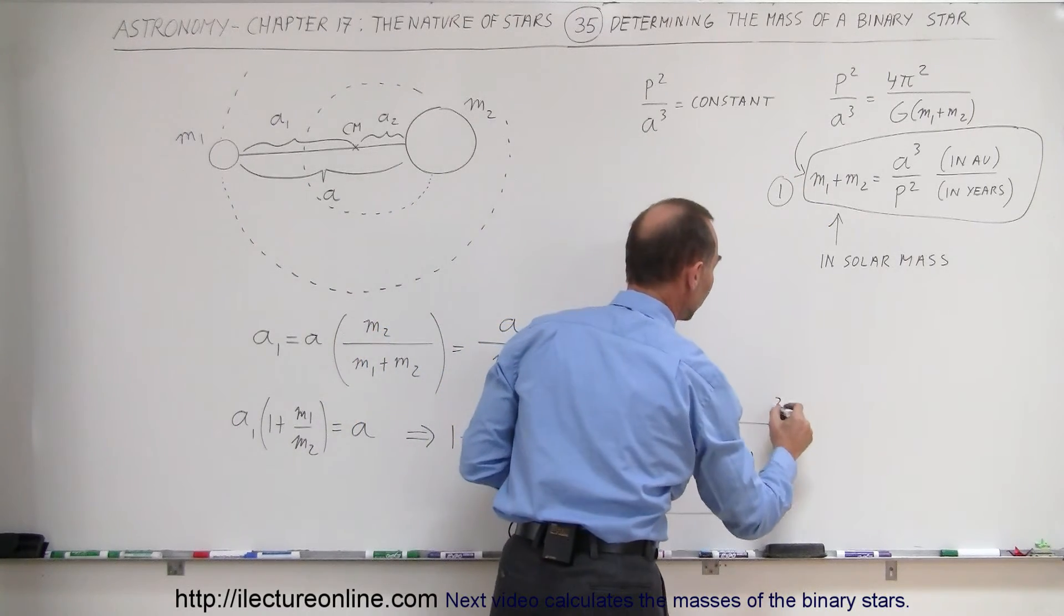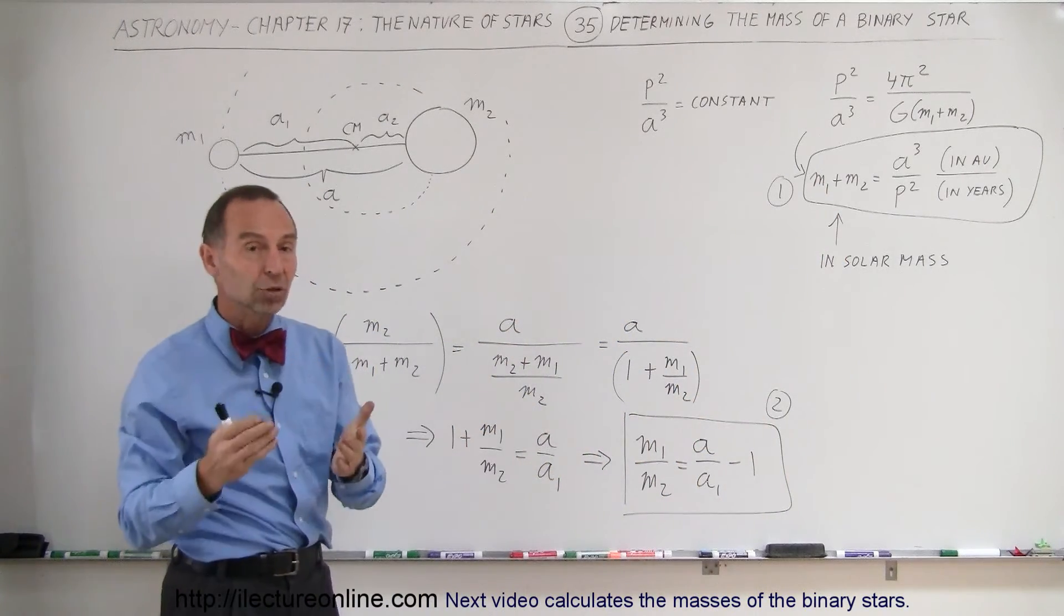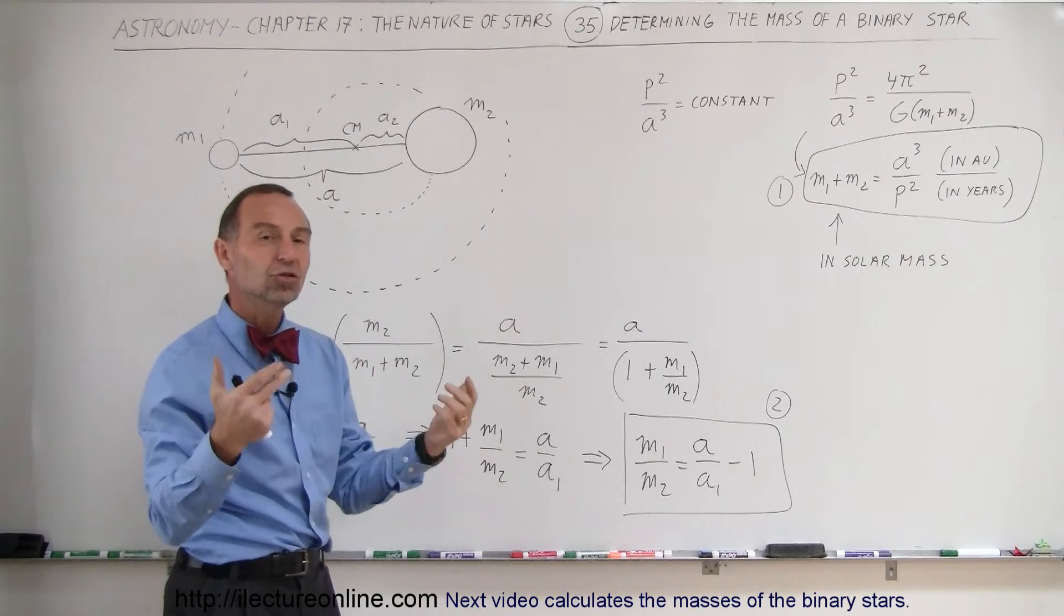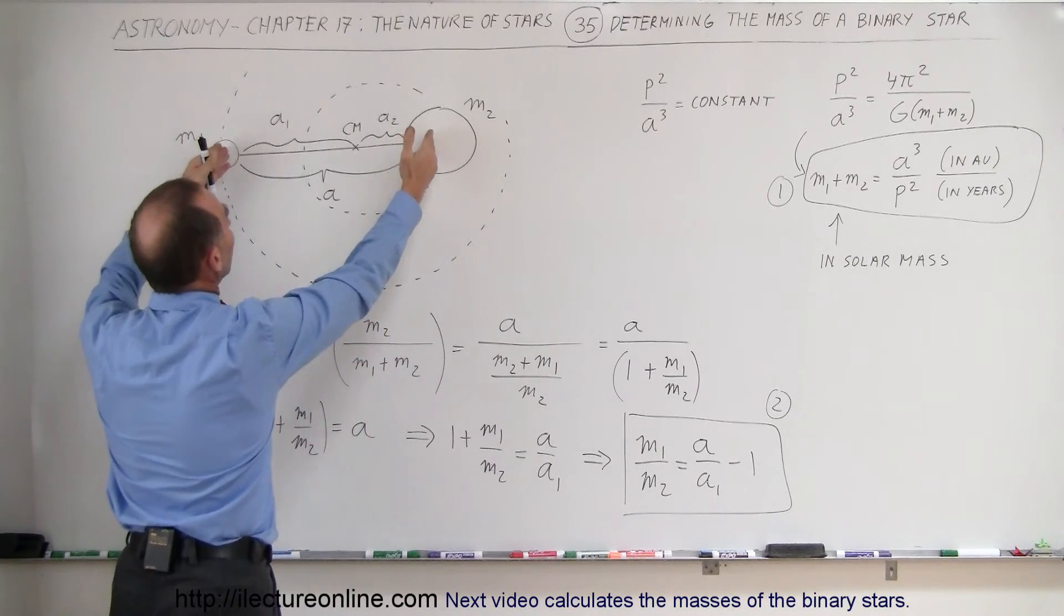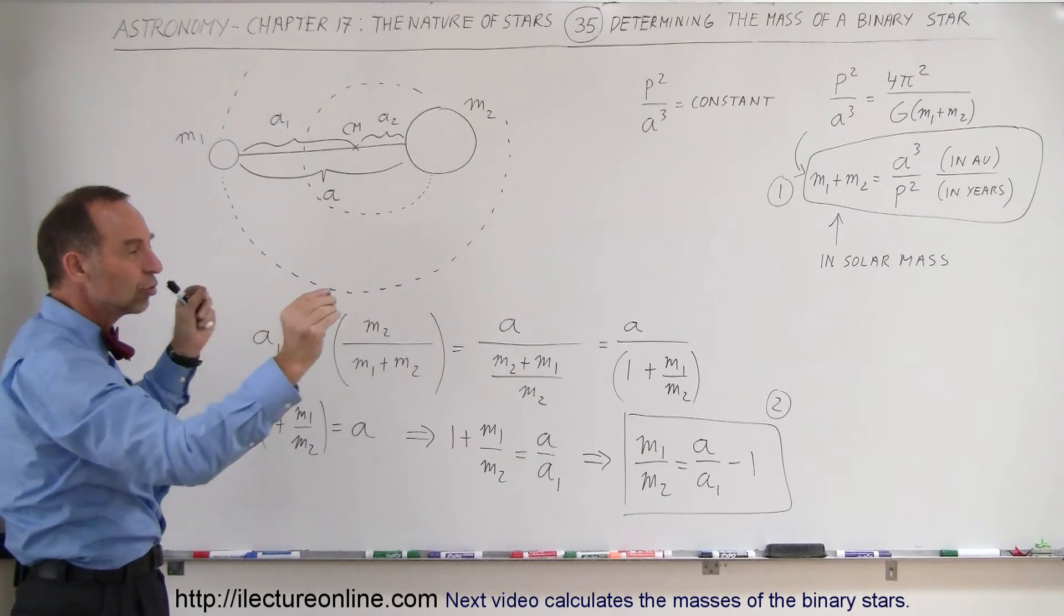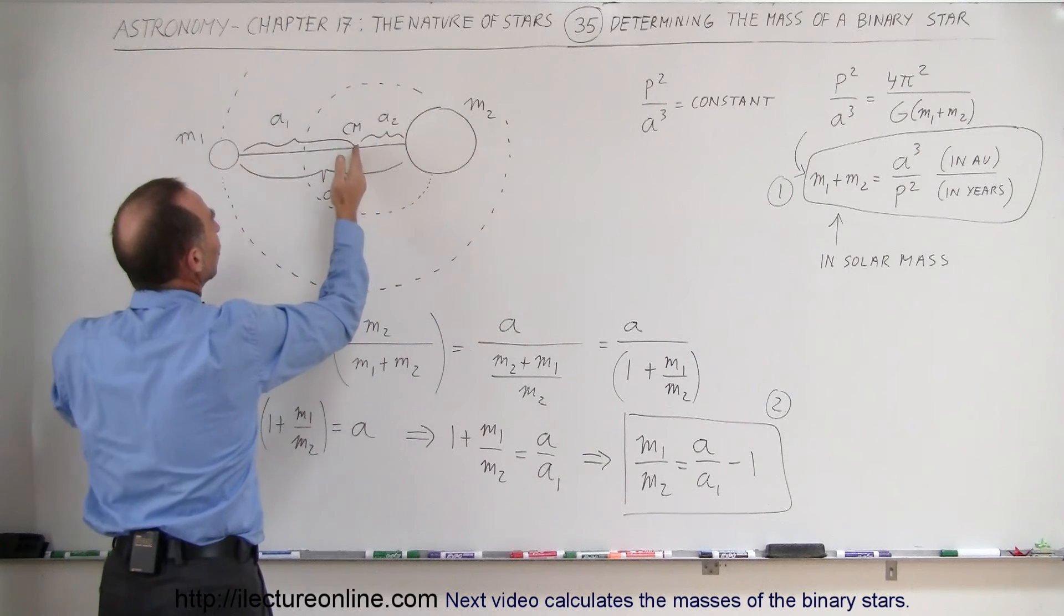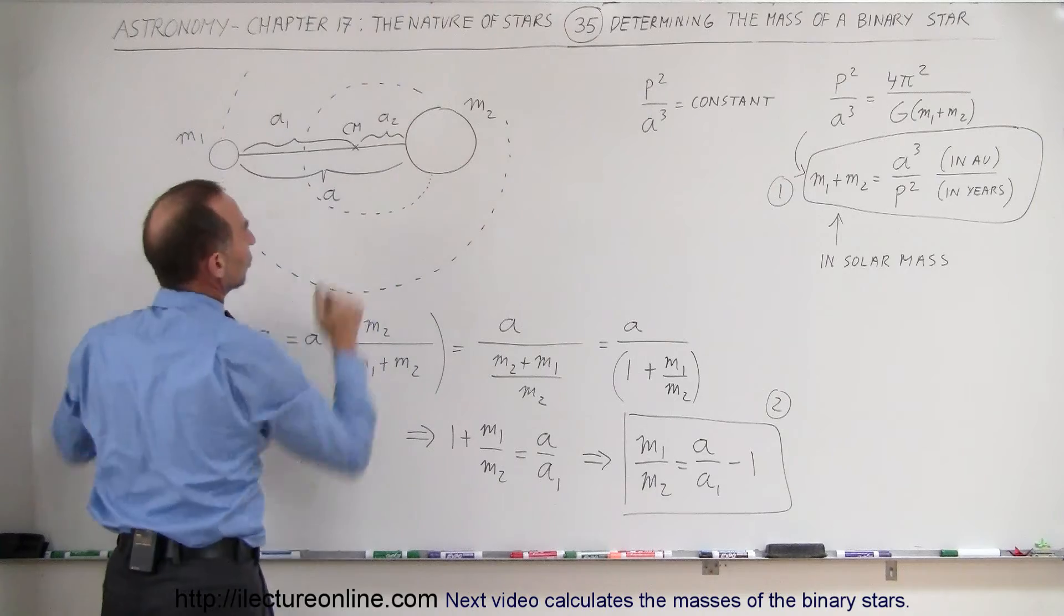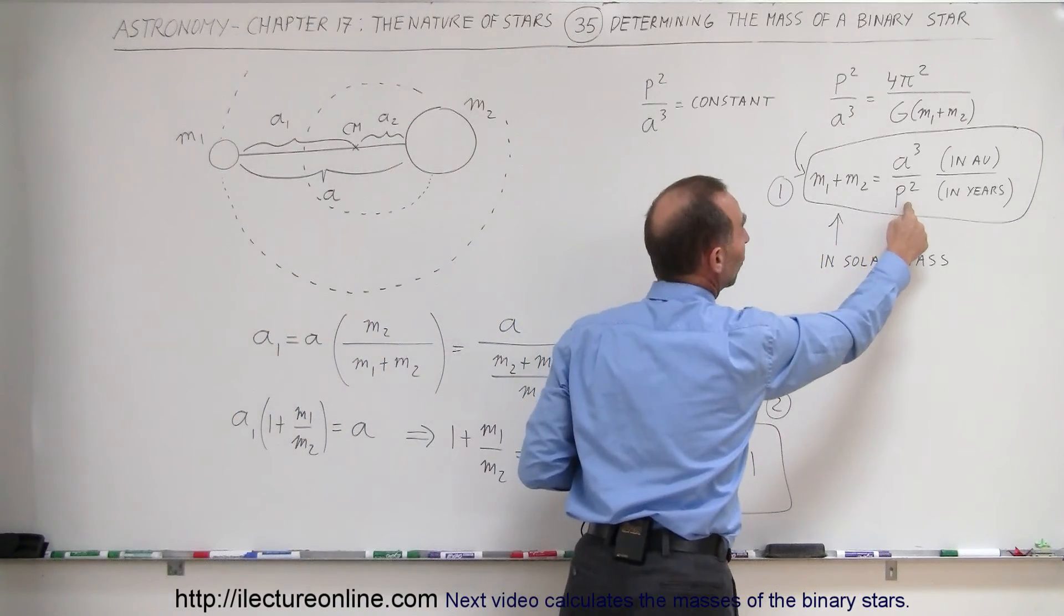Together we should be able to solve for both M1 and M2. This is how astronomers determine the mass of two stars in a binary star system. What they have to do, of course, is they have to measure the distance between the two stars, and that's usually done over years of observations as they see the two stars revolving around the center of mass. They determine this distance, then they determine the location of the center of mass and how big this distance is relative to the total distance.